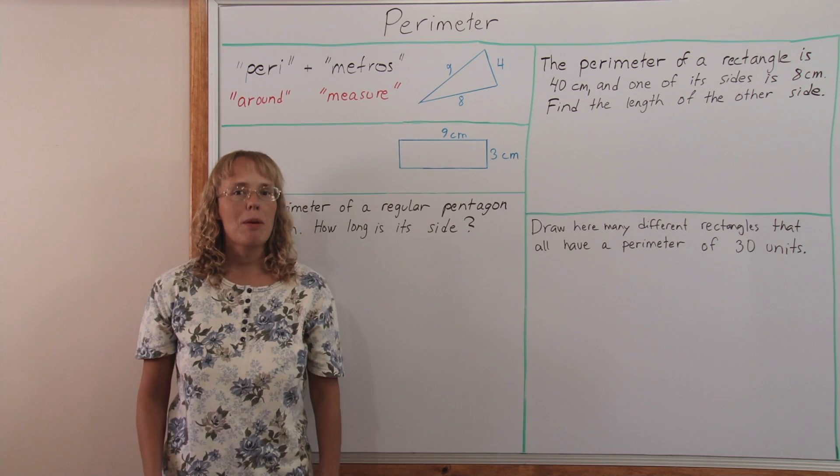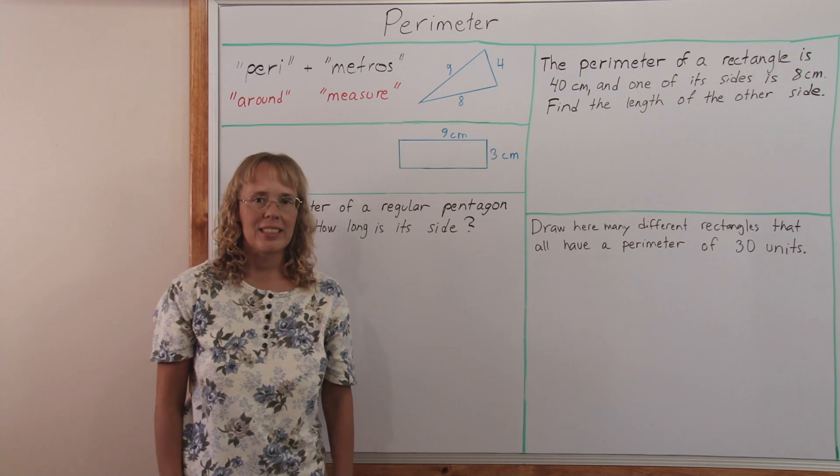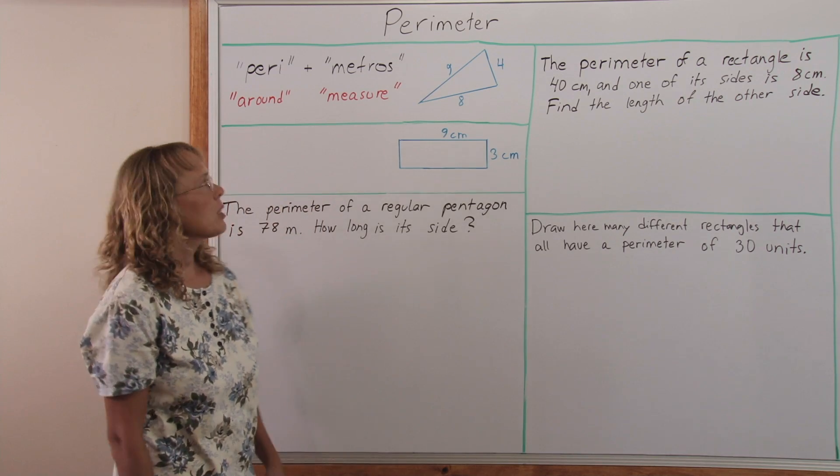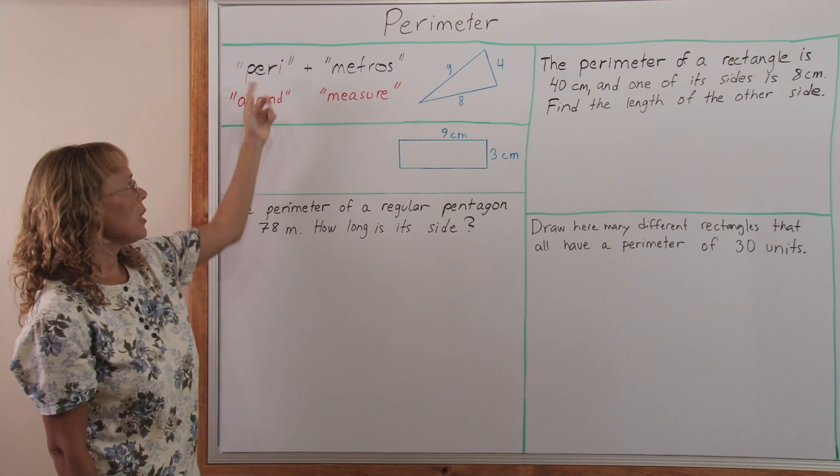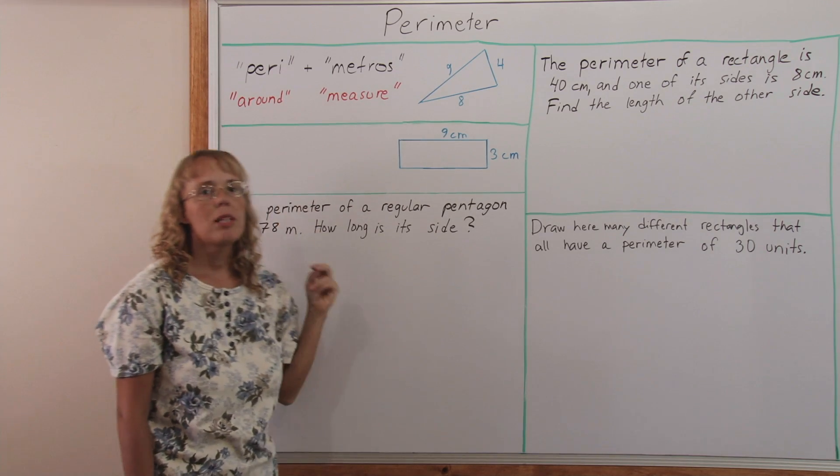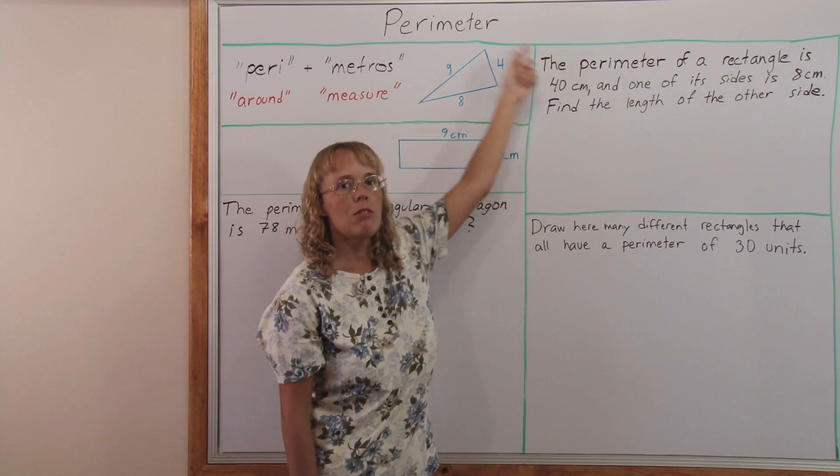The problem comes from remembering what that word means. Perimeter comes from the Greek word perimetros, peri meaning around and metros meaning measure. So it's the measure around the figure.